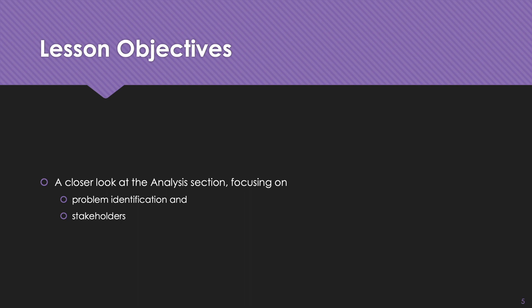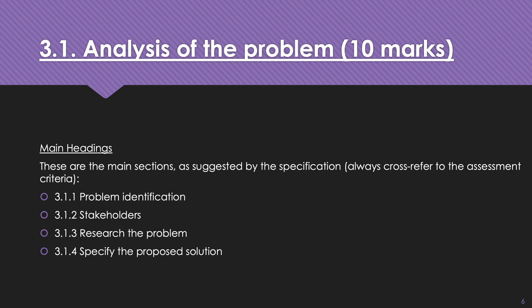Today we're taking a look at the Component 3 project, specifically the analysis section or at least the first part of it. The purpose of this video is to consider problem identification and stakeholders. Looking at the specification, analysis comes under four main headings, and it's always a good idea to use the specification to start structuring your document. You should have those headings in there, and often it's a good idea to have some subheadings as well.